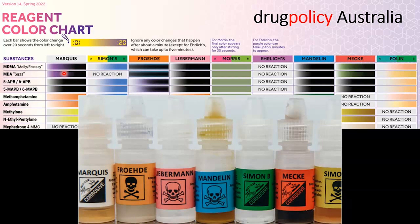Underneath the name of each test is a colour bar which represents a 20-second duration. So any change in colour is what you would see in the first 20 seconds after applying the test reagent, unless there's a specific caveat for longer times. Looking quickly at Simon's test, we can see that to perform it, it's a yellow-green combination — so we would add a drop of the yellow reagent followed by a drop of the green reagent, and then we would expect to see a transition from colourless to blue over 20 seconds for MDMA.